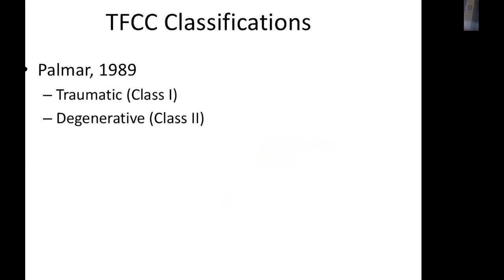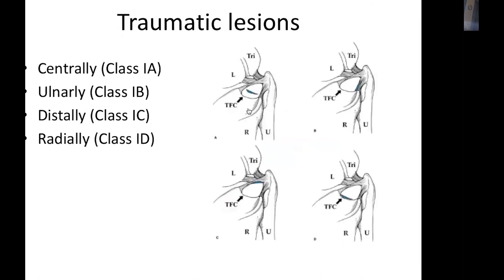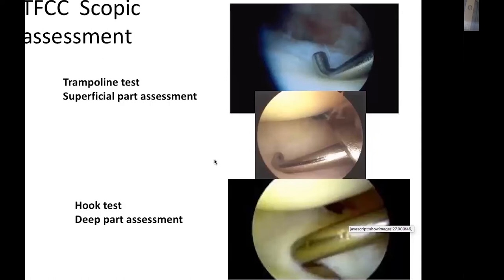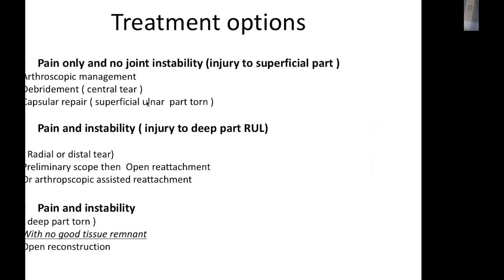TFCC is classified according to Palmer into traumatic (class 1) and degenerative (class 2). Class 1 is subdivided into A (central), B (ulnar), C (distal), and D (radial injury). TFCC assessment requires MRI arthrography to detect the attachment of the TFCC, and arthroscopic tests including the trampoline test to assess resilience of the superficial TFCC, and the hook test — if you can go beneath the TFCC and lift it toward the radiocarpal joint, it indicates a deep TFCC tear. A positive hook test with instability requires surgical reattachment; absence of trampoline resilience alone indicates a superficial tear, manageable arthroscopically by debridement or capsular repair.